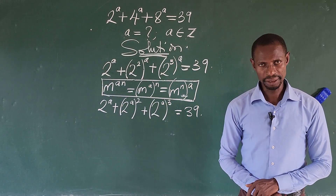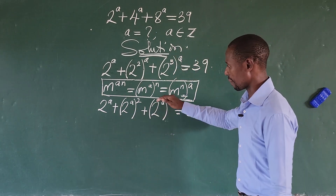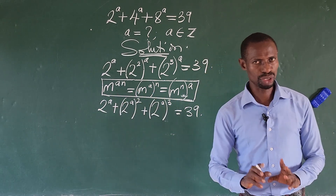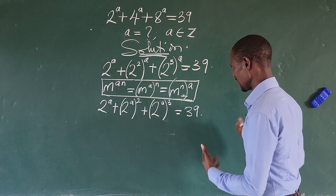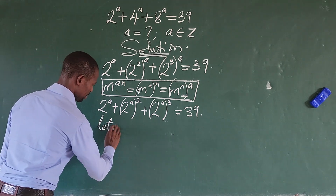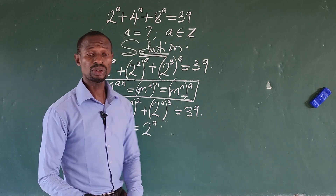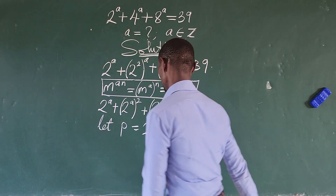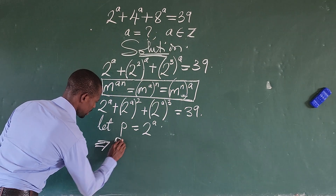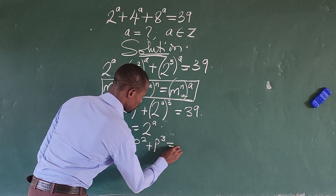Now that we have 2 to the power of a common to everything here, with the powers in ascending order, we can do a simple substitution. Let p be equal to 2 to the power of a. So we're going to put p in place of 2 to the power of a. This implies that our p — which is the first term — plus p to the power of 2, plus p to the power of 3, equal to 39.